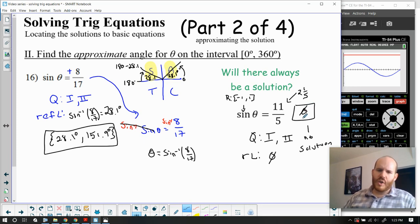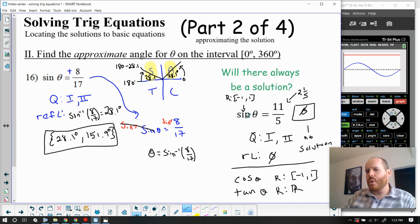The same will actually go for cosine. Cosine theta also has a range from negative one to one. So same situation, if cosine is equal to something larger than one, you'll have no solution. The exception to this is tangent, because tangent has a range of all real numbers. So tangent can actually equal anything. So the only two trig functions that you really need to worry about where you could wind up with no solution are the values for sine and the values for cosine.